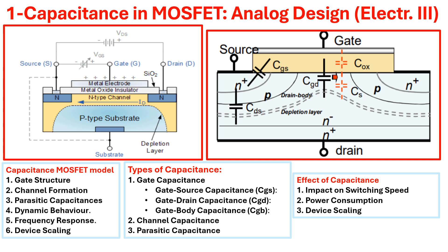Now we discuss the impact of these capacitors on the performance of the MOSFET. The first impact is on switching speed. The total capacitance at the gate and channel can affect the charging and discharging time, and therefore influences the switching speed of the MOSFET. High capacitance can lead to slower switching speed, which is very critical in high-speed applications.